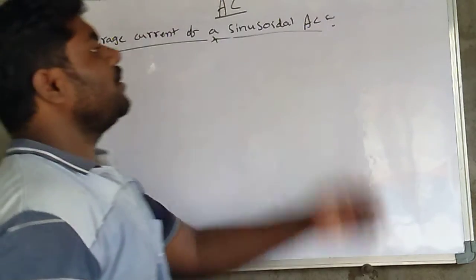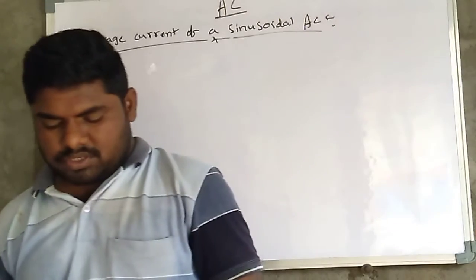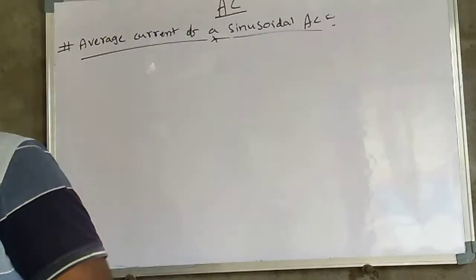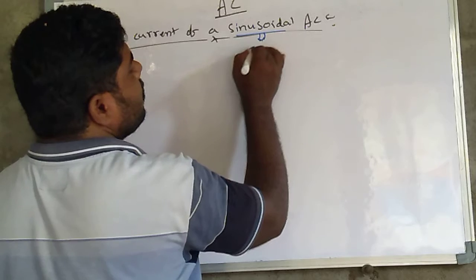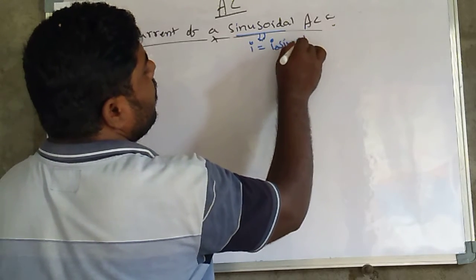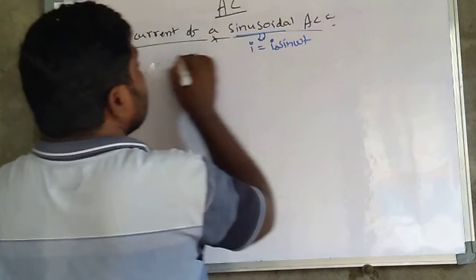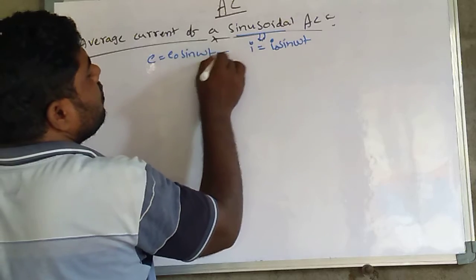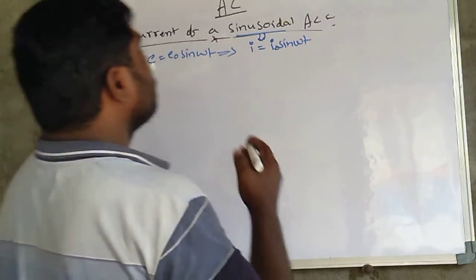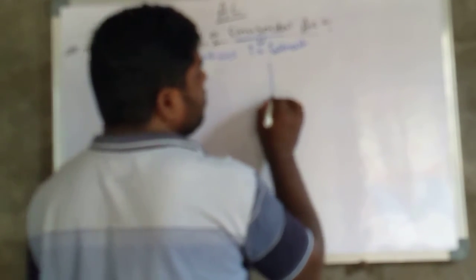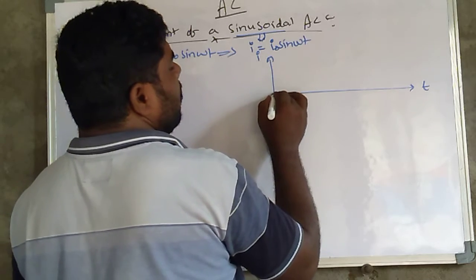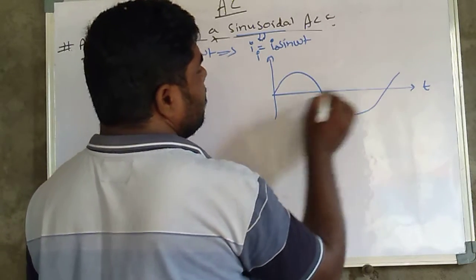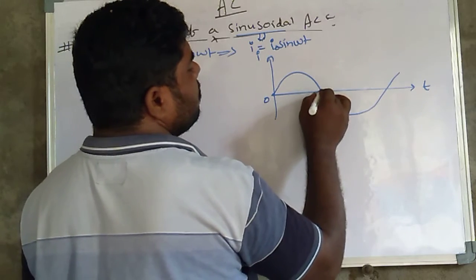Another important topic is the average current of a sinusoidal AC wave. A sinusoidal wave is expressed as i = i₀ sin(ωt), because we already discussed e = e₀ sin(ωt), and according to Ohm's law e is directly proportional to i. On the x-axis is the time value and on the y-axis is the current value, giving us a sinusoidal wave. At t = 0, this is the half cycle.